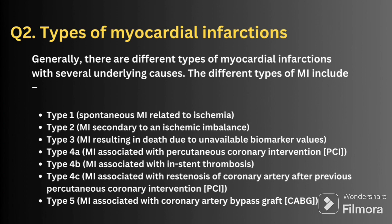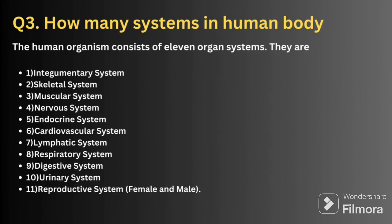The next question is: what are the types of myocardial infarction? There are different types with several underlying causes. Type 1 is spontaneous myocardial infarction related to ischemia. Type 2 MI is secondary to ischemic imbalance. Type 3 MI results in death due to unavailable biomarker values. Type 4 MI is associated with percutaneous coronary interventions. Type 4B MI is associated with stent thrombosis. Type 4C MI is associated with restenosis of the coronary artery after previous percutaneous coronary intervention. Type 5 MI is associated with coronary artery bypass graft.